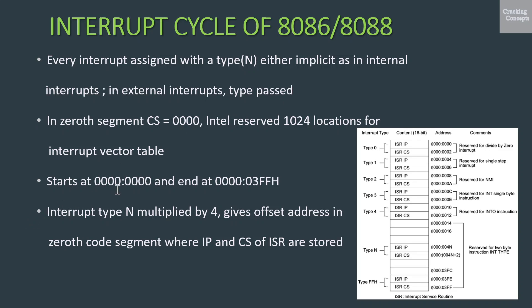Hence, the interrupt vector table starts at location 0000:0000 and ends at 0000:03FFH. The interrupt vector table contains the instruction pointer and code segment register addresses of all interrupt types stored sequentially. The interrupt type N is multiplied by 4, and the resulting hexadecimal value gives the offset address in the 0th code segment at which the IP and CS addresses of the interrupt service routine are stored. Execution automatically starts from this new CS:IP.